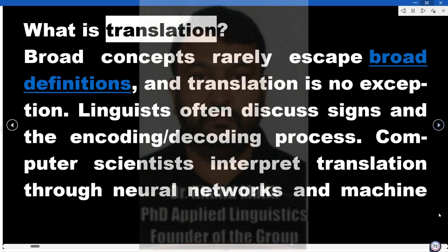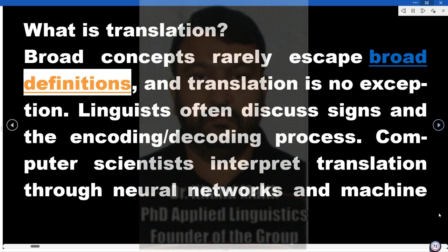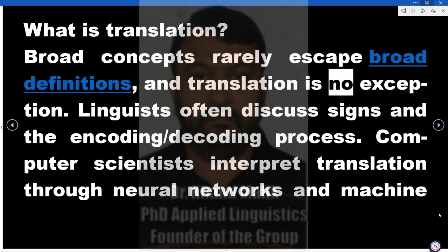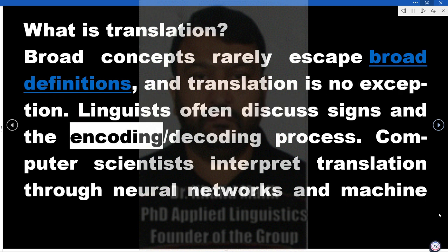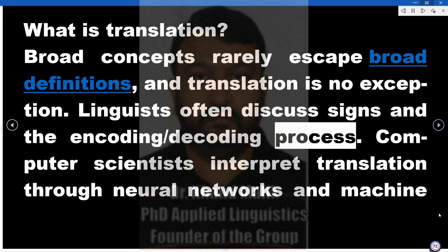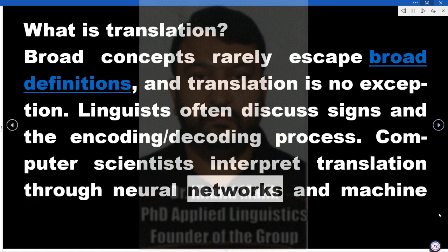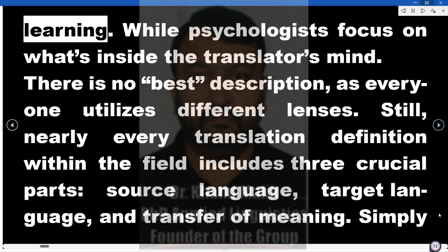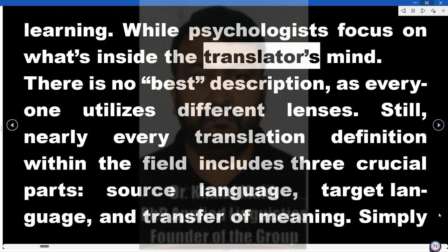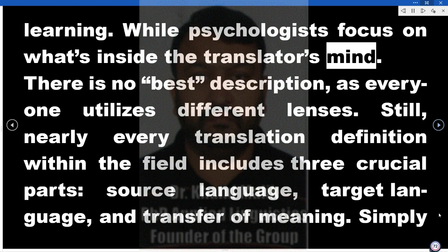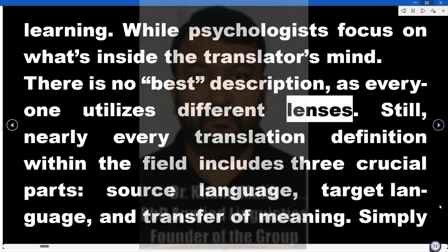What is translation? Broad concepts rarely escape broad definitions, and translation is no exception. Linguists often discuss signs and the encoding and decoding process. Computer scientists interpret translation through neural networks and machine learning, while psychologists focus on what's inside the translator's mind. There is no best description, as everyone utilizes different lenses.